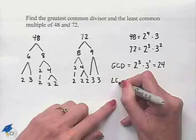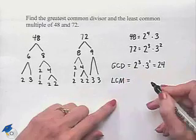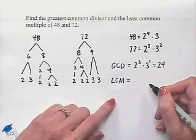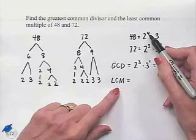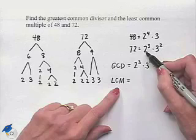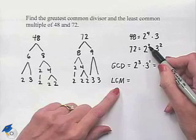To find the least common multiple, we have to have this number being a multiple of each one. That means that when we look at the 48 and we see that we have 2 to the fourth as part of its factorization, and then we look at the 72 and we see we have 2 cubed as part of its factorization.